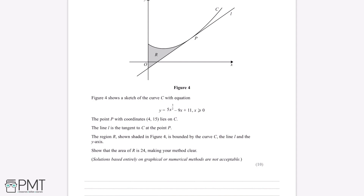The first thing we want to recognise is that because the line L is the tangent to C at the point P, which happens at an x-coordinate of 4 and a y-coordinate of 15 — so we write the coordinates as (4, 15) — at the point P, the curve C and the line L have the same gradient.